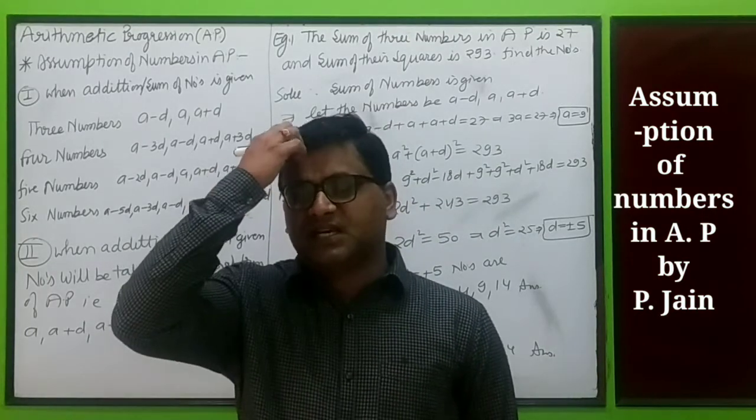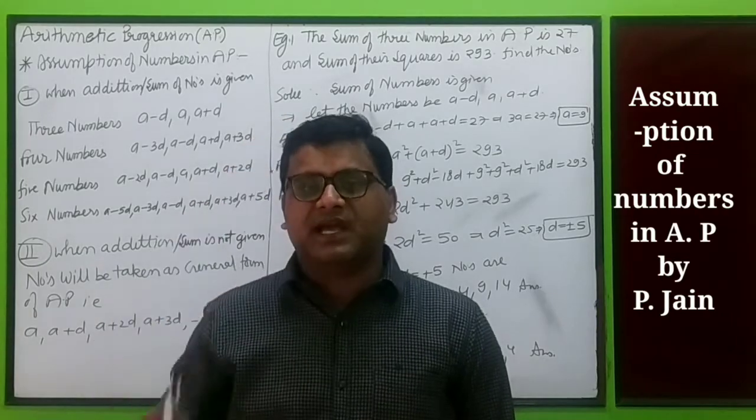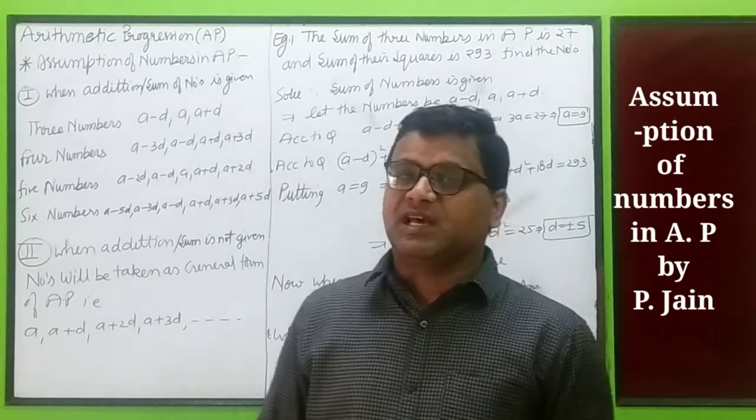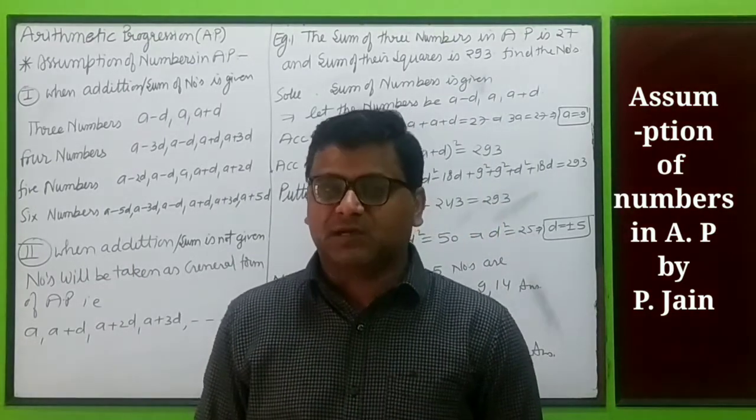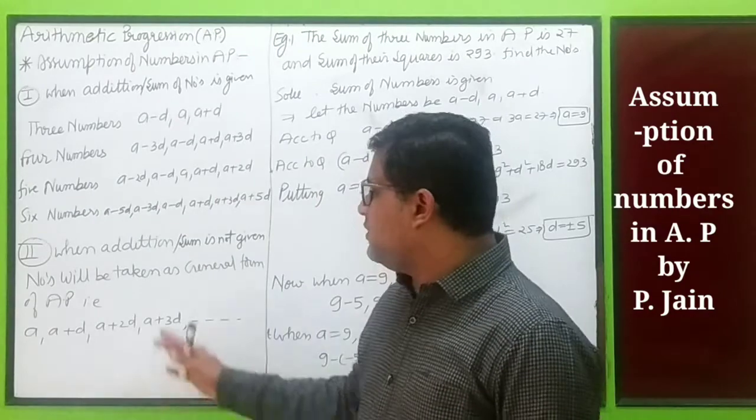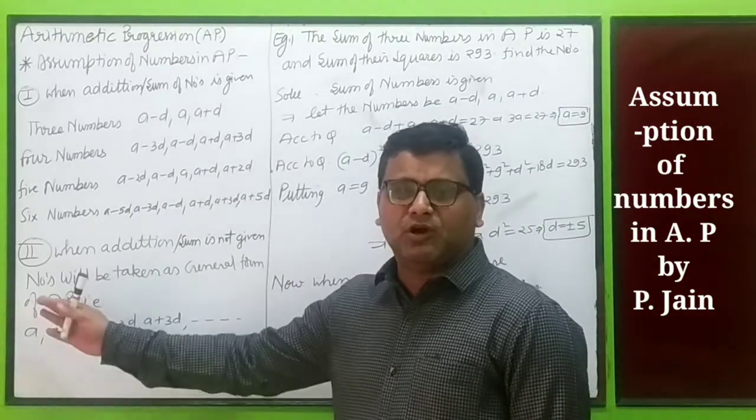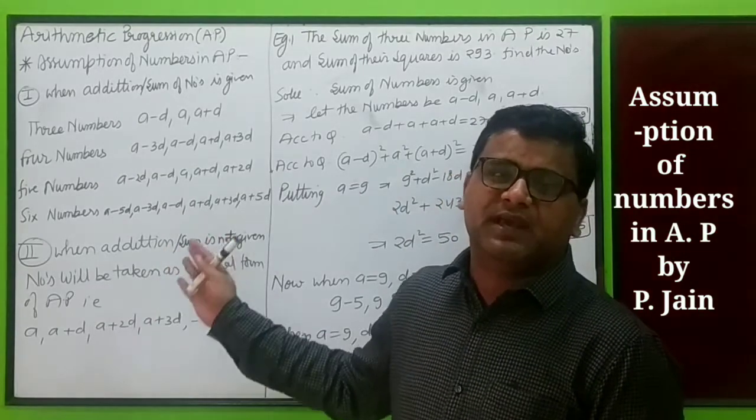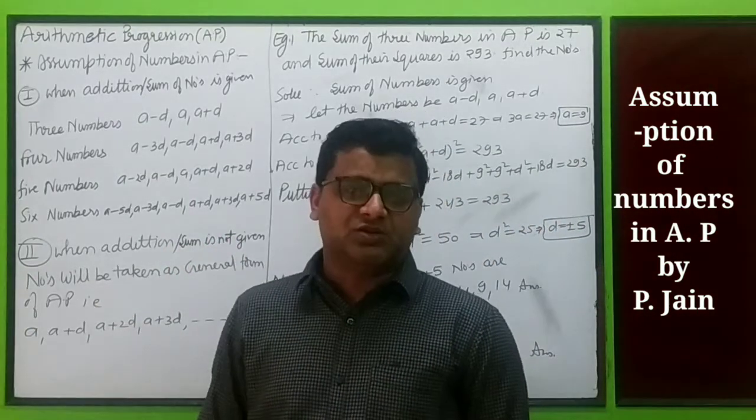The logic is that when we do the calculation of the sum, d cancels and a remains. The second case is when the sum of numbers is not given, then we use the normal general form a, a plus d, a plus 2d, a plus 3d, as many terms as required.